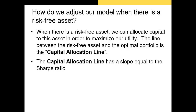Now in the real world, we can invest in both risk-free assets like T-bills and T-bonds, as well as risky assets, and we need to take that into account. When we can invest in a risk-free asset, we can allocate capital to that asset in order to maximize our utility. The line between the risk-free asset and the portfolio with the highest Sharpe ratio is called the capital allocation line. The slope of the capital allocation line is exactly equal to the Sharpe ratio.